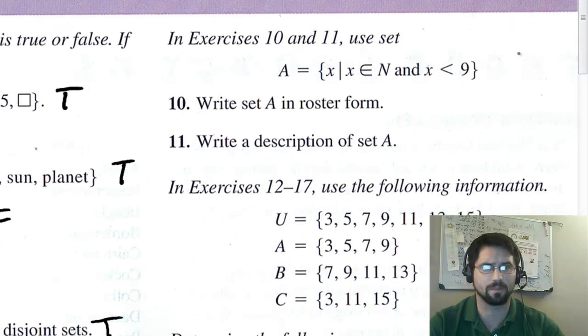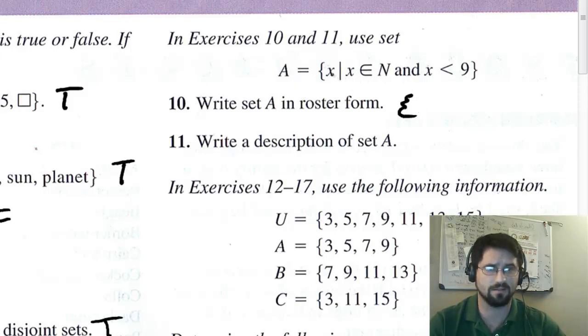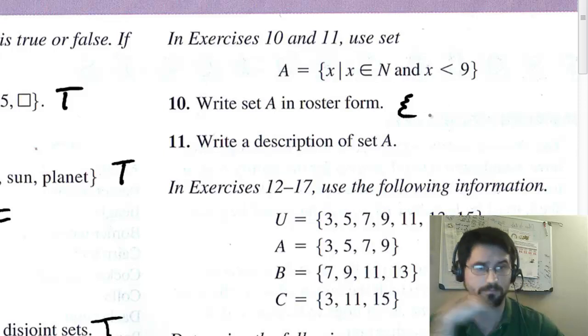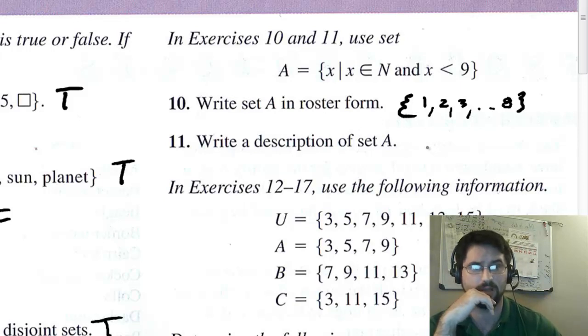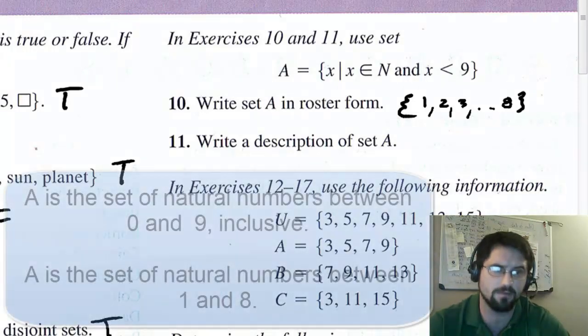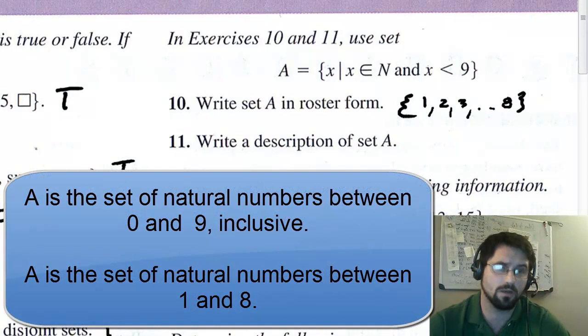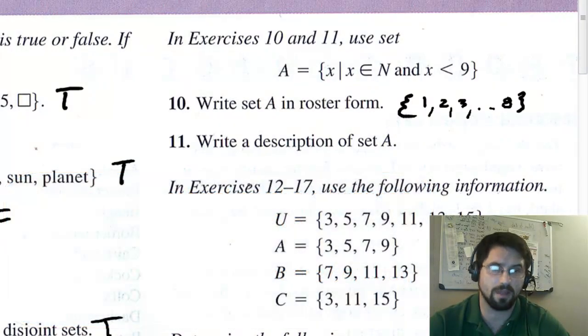Alright. Let's look at number 10. Write this set in roster form. So A is a set of values such that the values are natural numbers and less than 9. So natural numbers begin at 1, and we're only going to go up to 8, because it doesn't say less than or equal to 9. Write a description of set A. You could say, you could put a bunch of answers. I'm not going to write them down, but you could say A is a set of values, or the set of natural numbers between 0 and 9. You could say the set of natural numbers between 1 and 8 inclusive. Stuff like that.